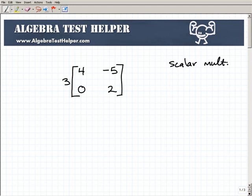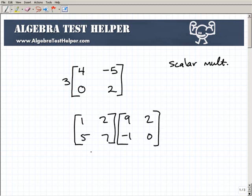Now that's different than multiplying two matrices together. So for example, let's suppose I had this, a matrix that was 1, 2, 5, 7, and I want to multiply that particular matrix by 9, 2, negative 1, 0. This is matrix multiplication.